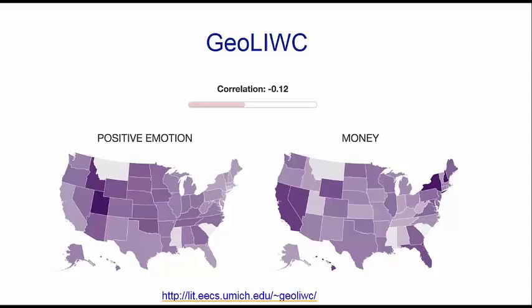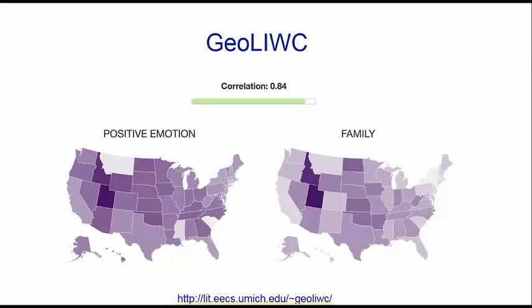We can then ask: if money does not bring happiness, what does? On the right we built a map for words having to do with family — words such as 'husband,' 'sister,' 'brother' — and their distribution across the 50 states. We see there is a strong positive correlation between positive emotions and family.